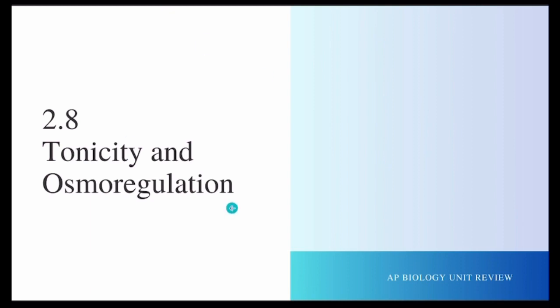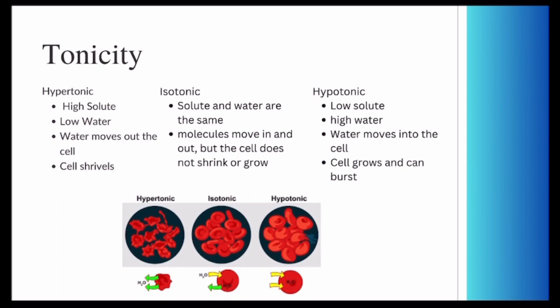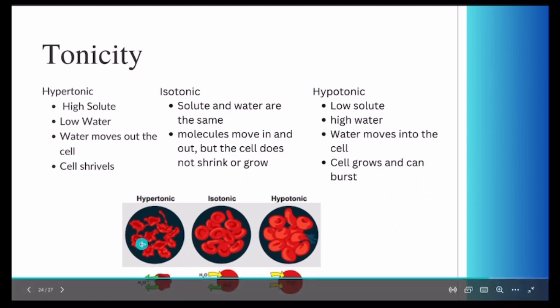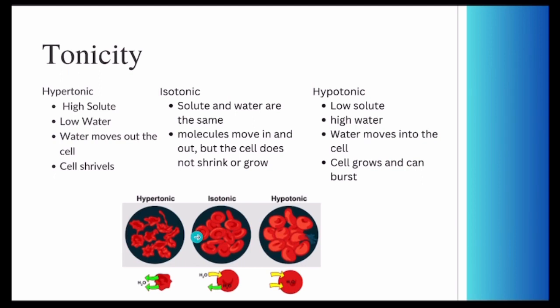Next, we're going to be talking about tonicity and osmoregulation. There's three different types of solutions: hypertonic solution, isotonic solution, and hypotonic solution. A hypertonic solution has a high amount of solute and a low amount of water. This means that water is going to move outside the cell, which will cause the cell to shrivel. A hypotonic solution has low solute and high water, which causes water to move inside the cell, and this can cause the cell to grow and even burst. An isotonic solution is basically like equilibrium, where the solute and water is the same, and molecules move inside and out of the cell. The cell does not shrink or grow.